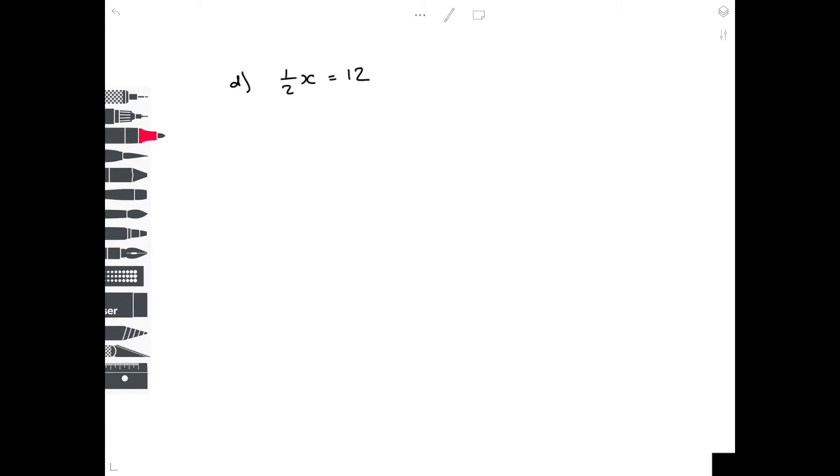Now, this is slightly more complicated, where we have a situation where half of x equals 12. We want x by itself, so how do we do that? Well, we need to make it equal effectively 1x, which means we need to do a half times 2. So we're going to times 2 on both sides. A half times 2 is just 1, which means we're just left with x by itself. 12 times 2 is 24. Double check your answer. Is half of 24 equal to 12? Yes, it is. So that is, again, the correct answer.